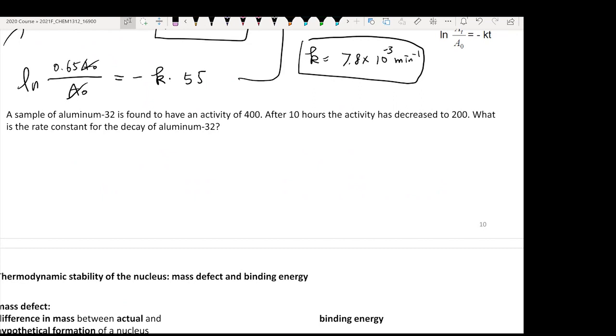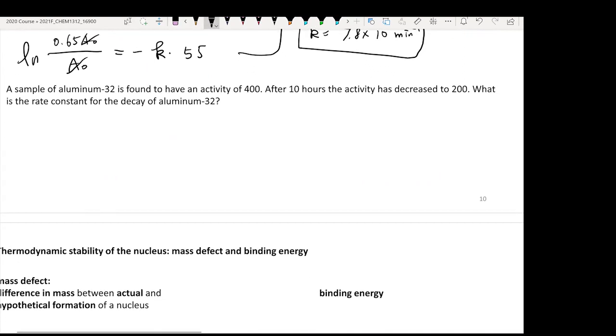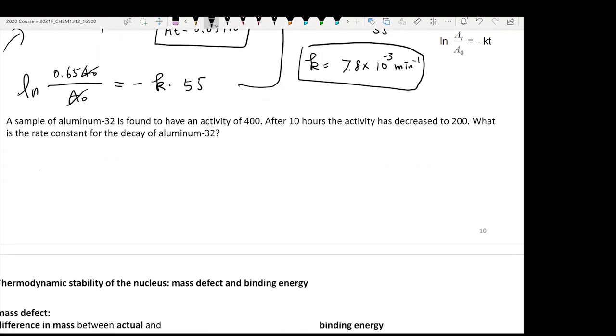A sample of aluminum-32 is found to have activity of 400, and after 10 hours its activity has decayed to 200. What is the rate constant for this decay? Every time you see this decay type of question, there's only one equation to go to: natural log At over A0 equals negative k times t.